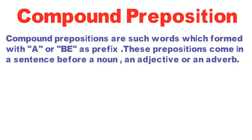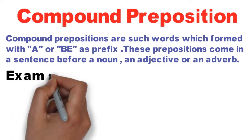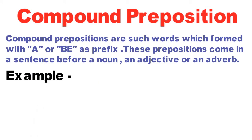Compound prepositions are such words which are formed with A or B as prefix. These prepositions come in a sentence before a noun, an adjective, or an adverb. Yani compound prepositions kuch aise words hote hain jo A or B laga kar banaye jate hain. Yeh aise prepositions hain jo sentences mein kisi noun, adjective ya phir adverb ke pehle aati hain.